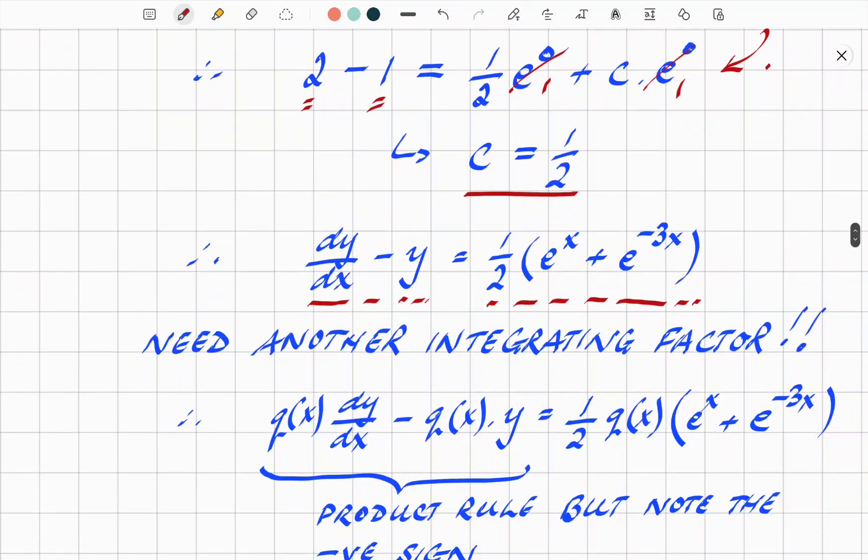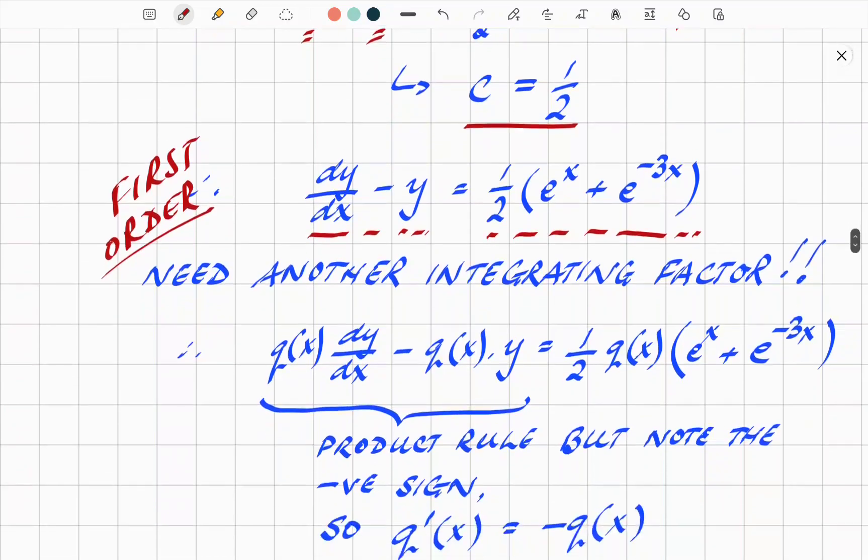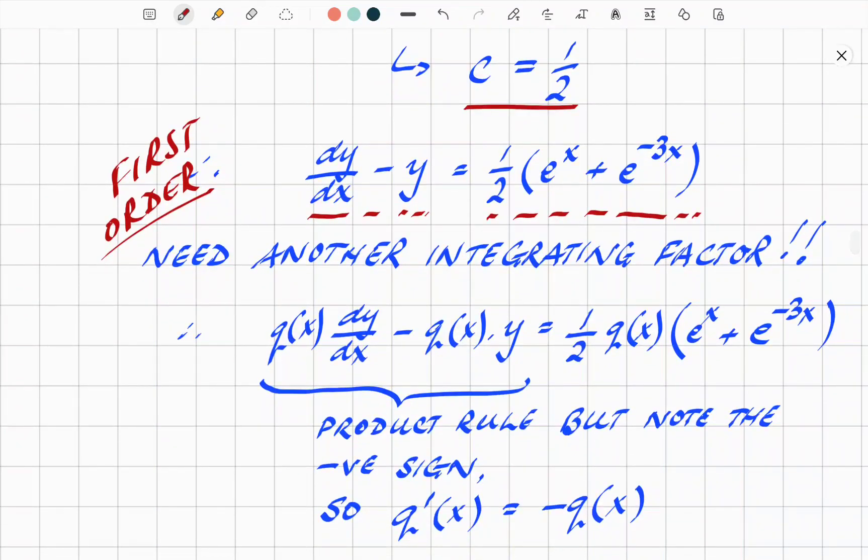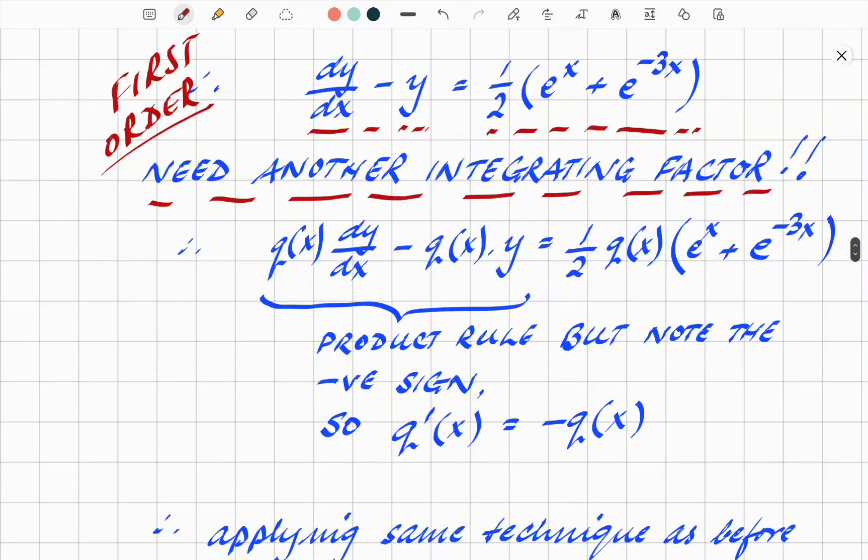Putting that back into the equation and rearranging, we get dy/dx - y = (1/2)(e^x + e^(-3x)). We've now gone to a first order. So that whole effort, as I said, was to transform the second order equation into a first order equation, simplifying it one level at a time. Very much like peeling an onion, one layer and getting to the core function one layer at a time. Again, we need an integrating factor. So another one.